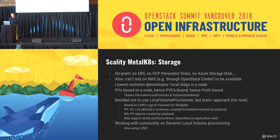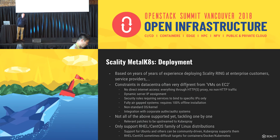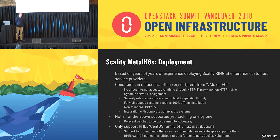Deployment is based on our experience deploying Scality Ring at enterprise customers and service providers. The constraints we have are often very different from VMs on EC2 or Google. For example, with most enterprise data centers you don't get direct internet access — everything is behind an HTTP/HTTPS proxy. There can be dynamic server IP assignments via DHCP, various security rules like services binding to specific addresses rather than 0.0.0.0, fully air-gapped systems requiring 100% offline installation, non-standard operating systems or kernels, and the need to integrate with corporate authentication systems. All of these are not currently managed by KubeSpray, but we aim to upstream any relevant patches and work with the community to get those integrated.